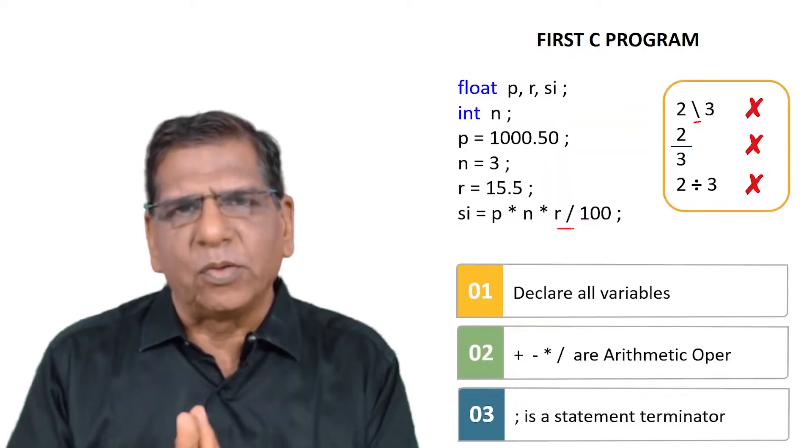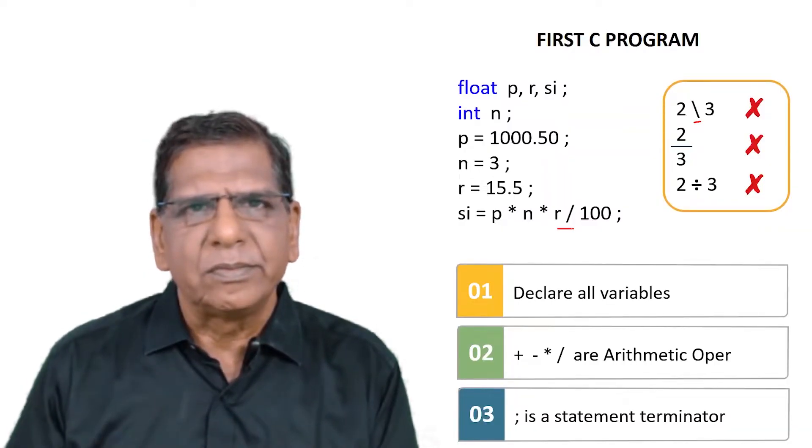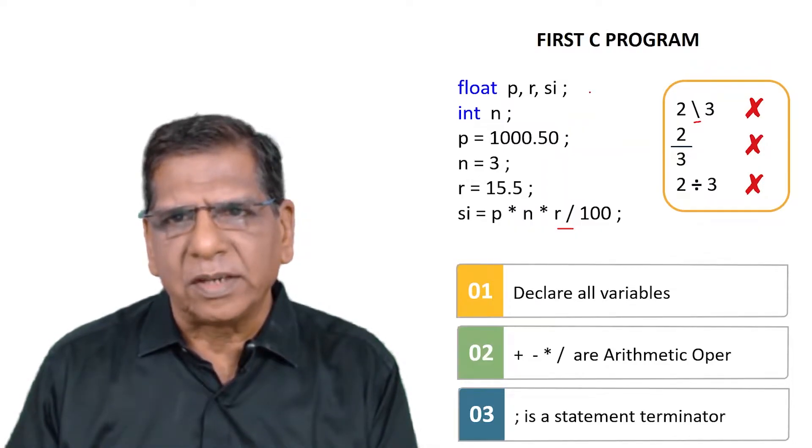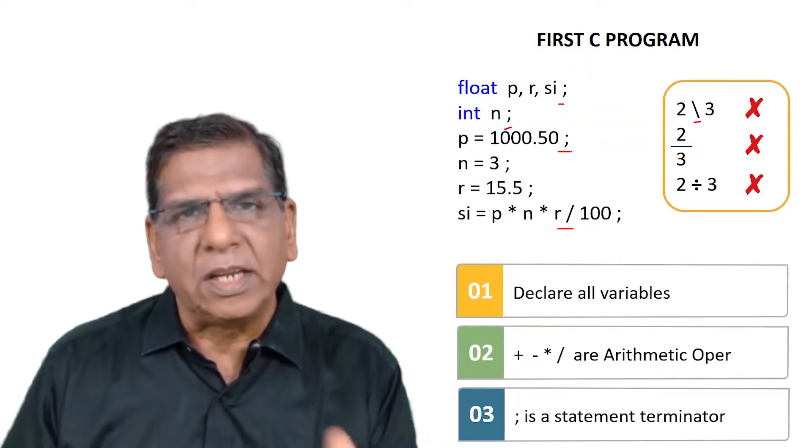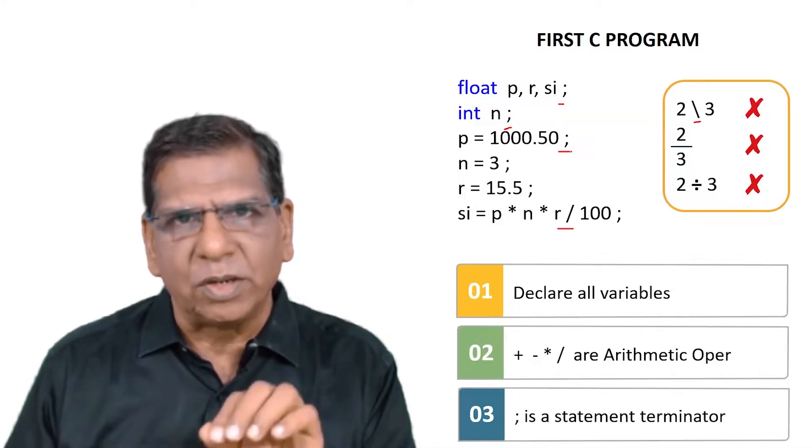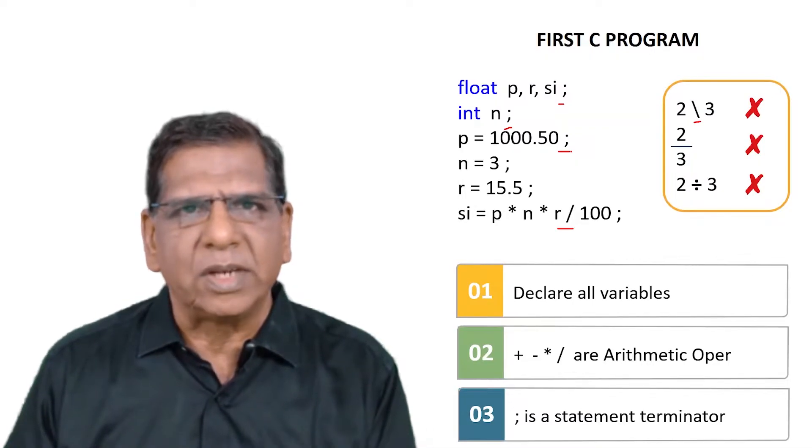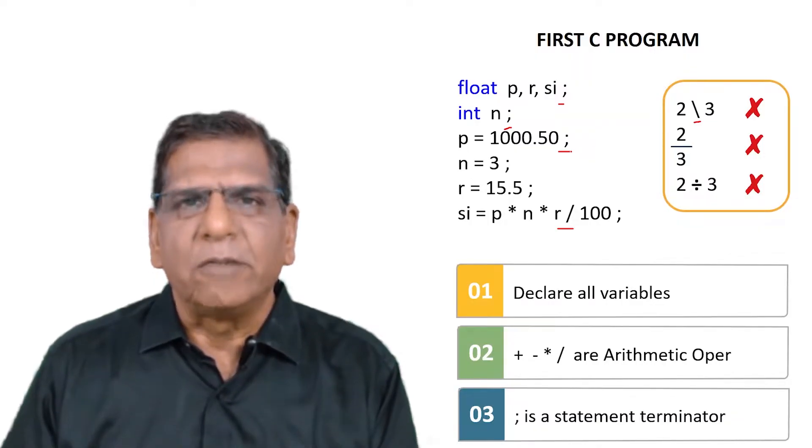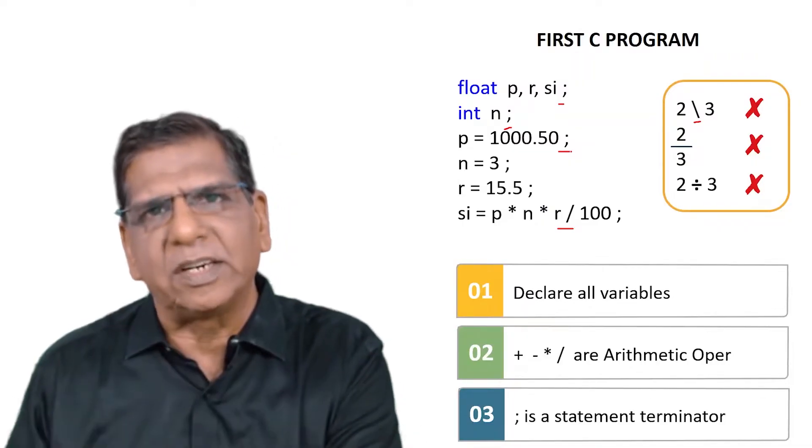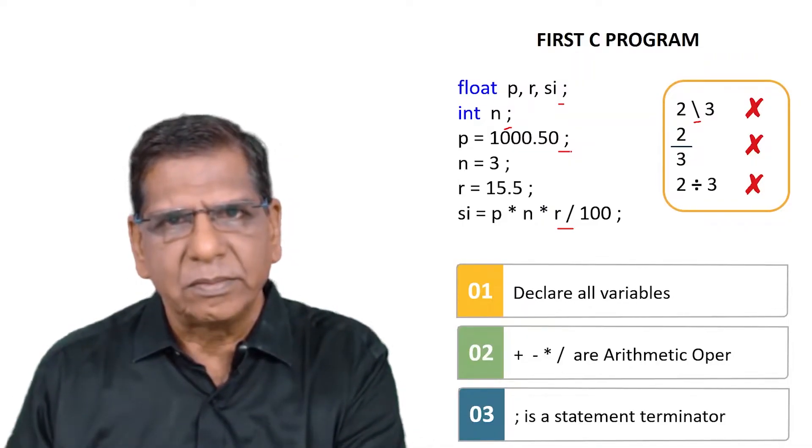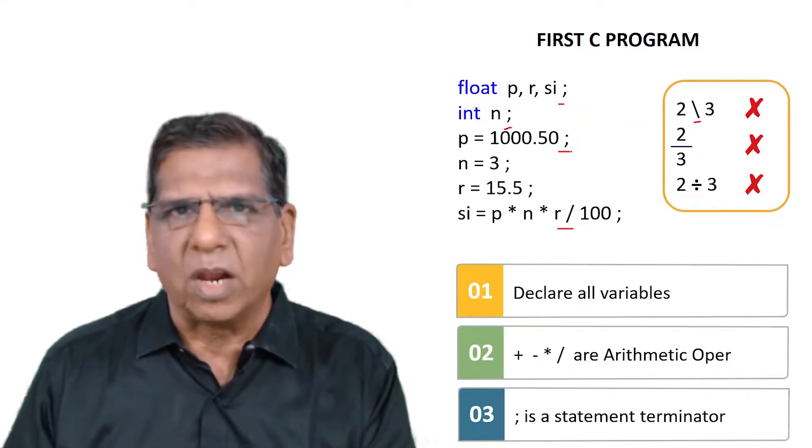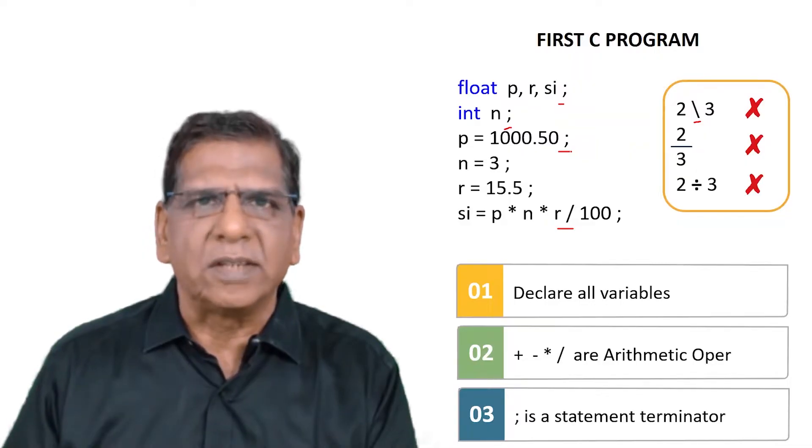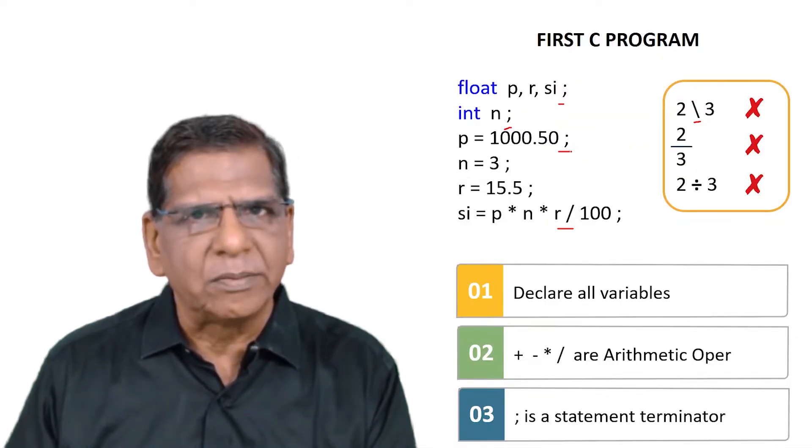Lastly, if you observe carefully, at the end of every statement we are using a semicolon. So first statement ends with a semicolon, then second ends with a semicolon, third ends with a semicolon, and so on and so forth. This semicolon really stands for a statement terminator. The way in English language you terminate a statement or a sentence using a full stop, similarly in C language you terminate a statement using a semicolon. Once you have written a statement and given a semicolon, you are free to write the next statement in the very same line. Good practice is to write them in different lines as we have done in this program. But if you so desire, you are allowed to write multiple statements in one single line, so long as they are separated from one another using a semicolon.